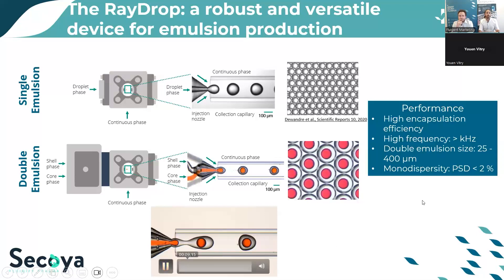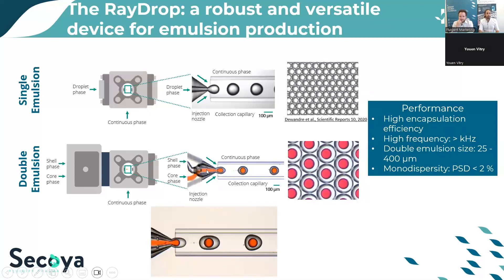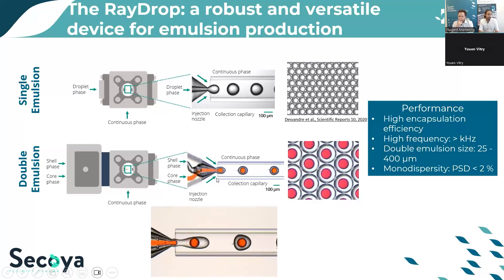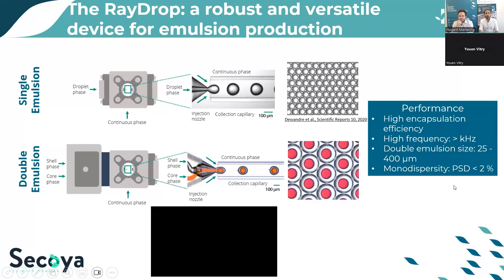With this technique we achieve encapsulation efficiency higher than 95%, since the core phase containing the active ingredient is totally encapsulated inside the double emulsion. We can generate droplets at high frequency up to kilohertz generation rates. Double emulsion size — as well as single emulsion — can range from 25 micrometers up to 400 micrometers with high monodispersity, with a size dispersion lower than 2%.